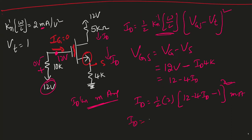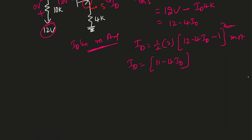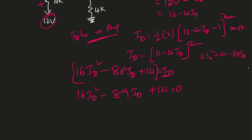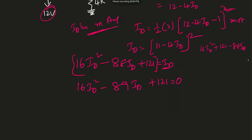Expanding, we get ID = (11 − 4·ID)², which leads to the quadratic: 16·ID² − 88·ID + 121 = ID. Bringing ID to the other side: 16·ID² − 89·ID + 121 = 0. Solving this quadratic equation gives two solutions: ID₁ = 3.197 mA and ID₂ = 2.36 mA. We need to determine which one is correct.